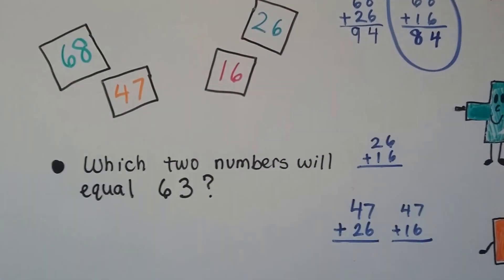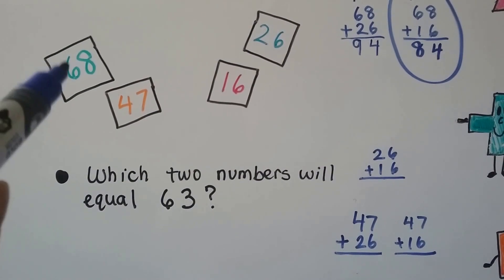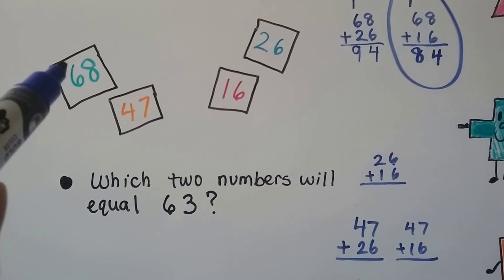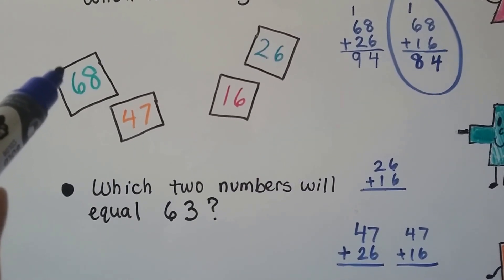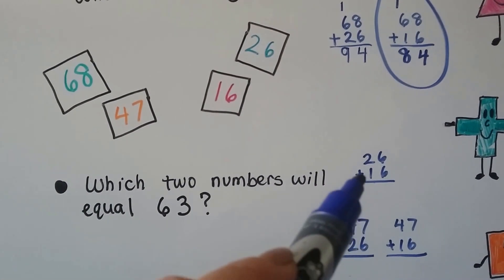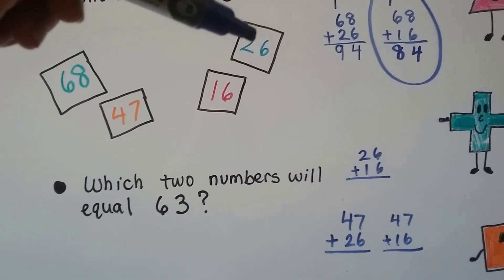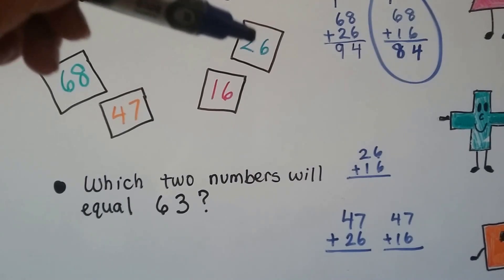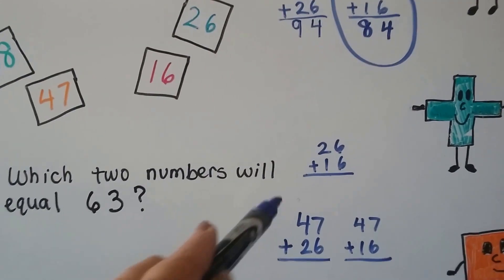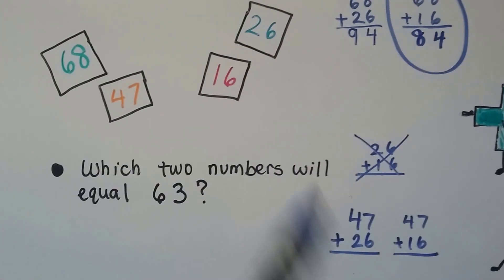Now what about this? It says which two numbers will equal 63. So we can't use the 68 — that's bigger than 63. If we add it to another number, it'll be really bigger than 63. So we're not going to use the 68 at all. We can try adding the 26 and the 16, but look at the tens place. We have a 20 and a 10. When we add these tens, we get 30 something. So that's not going to work — it's going to be too small.